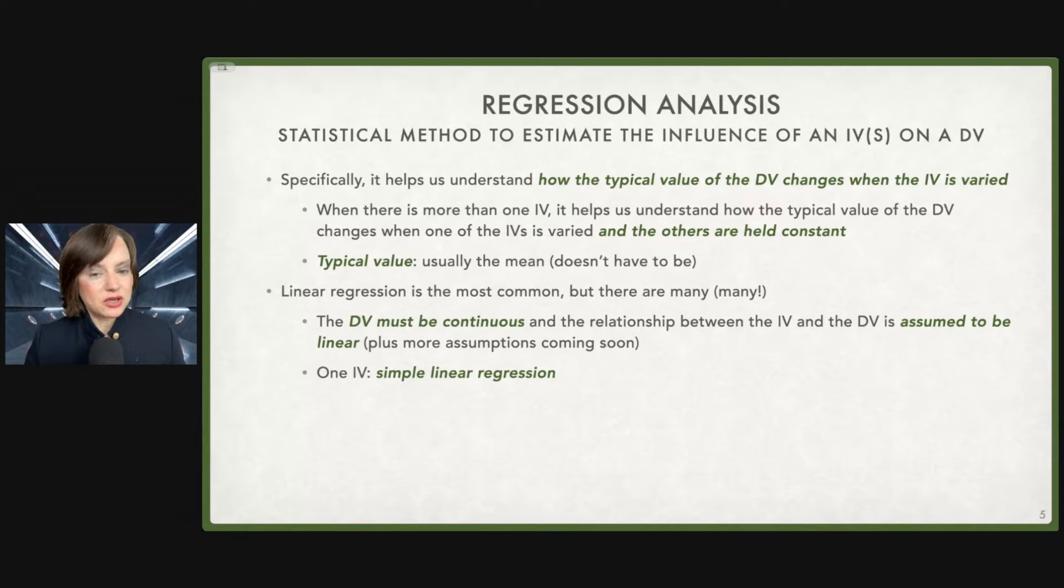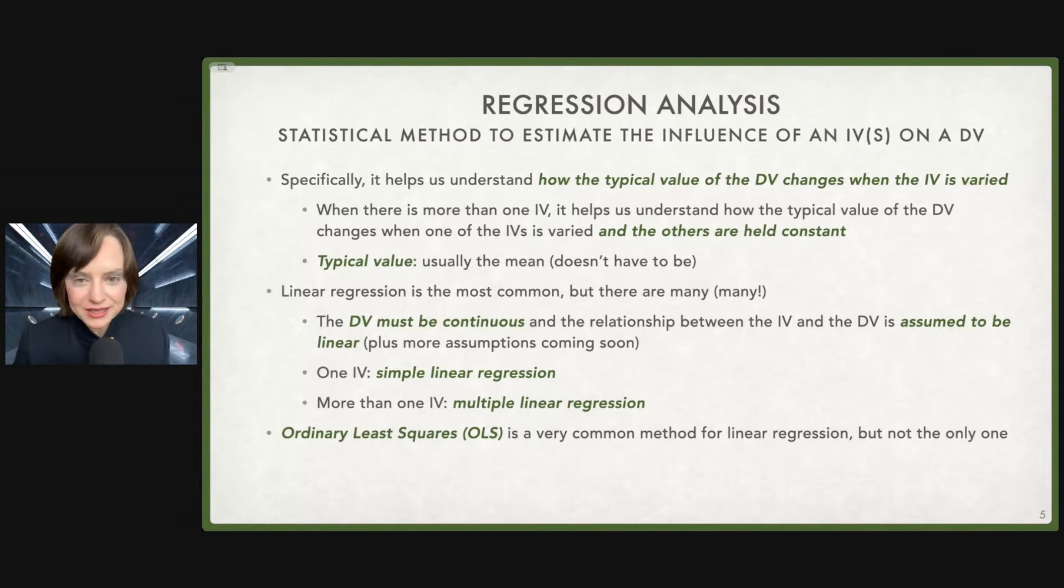When we're doing linear regression with one independent variable, we call that a simple linear regression. This is where statistics gets awfully fussy with its language. More than one independent variable means we are doing multiple linear regressions. You will hear people wrongly refer to that as multivariate linear regression. That is not that. That is something else.